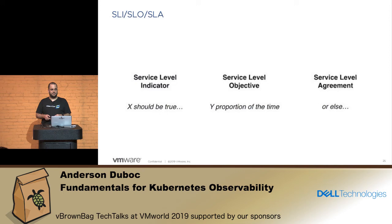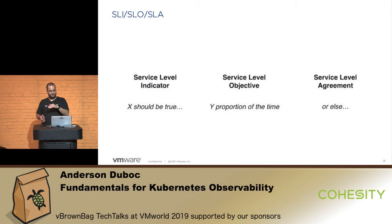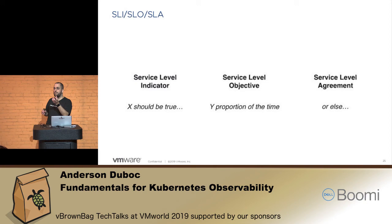So what is an SLI, SLO, SLA? An SLI — service level indicator — is that X should be true. A service level objective is that Y is a proportion of the time, so I want that to be some percentage of most of my time. A service level agreement is something like 'or else' — yeah.